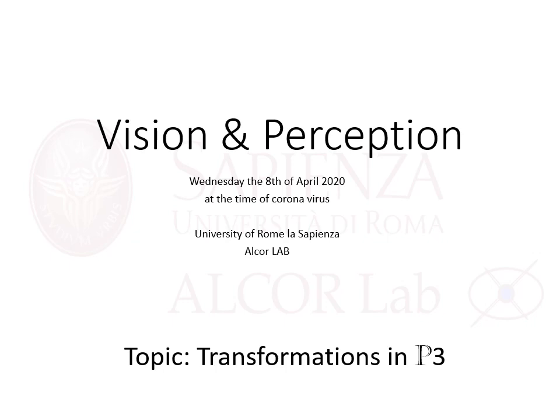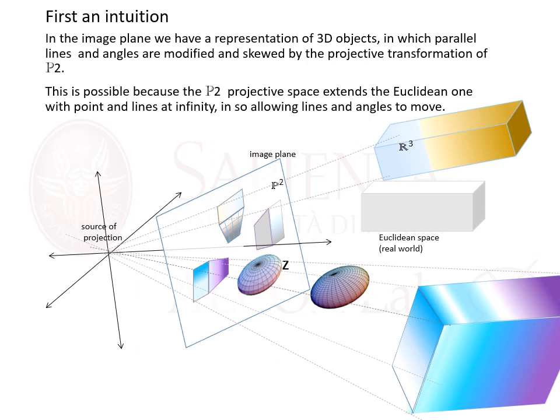In this video the topic is transformations in P3. First, an intuition. In the image plane we have a representation of three objects in which parallel lines and angles are modified and skewed by the projective transformation of P2.